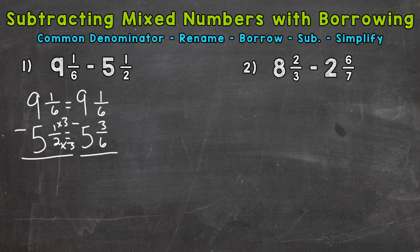So we are able to subtract, but we have one-sixth minus three-sixths. We can't do one minus three, so we need to borrow. Just like when we borrow with whole numbers, we're going to borrow from the place to the left — from the whole number nine. So we need to take one from the nine, so it's now an eight.